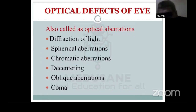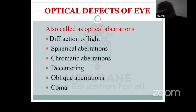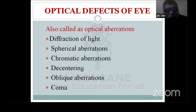No optical system is perfect — the human optical system also has defects. These are called optical aberrations and are physiological, not the same as refractive errors. The different types of optical aberrations are: diffraction, spherical aberration, chromatic aberration, decentering, oblique aberration, and coma.